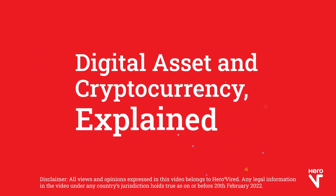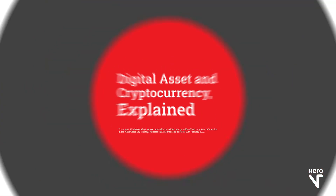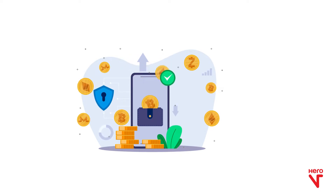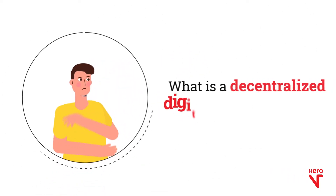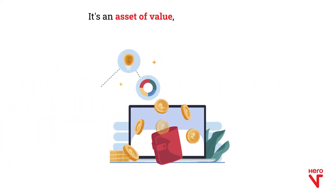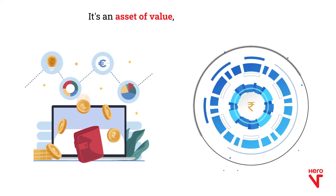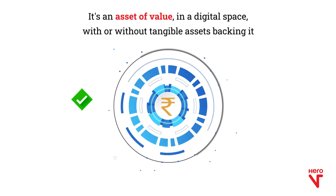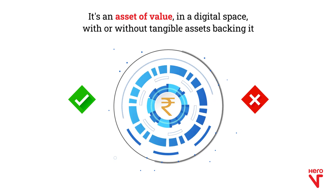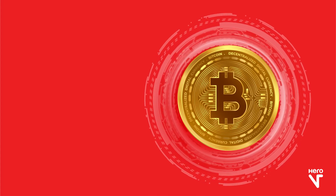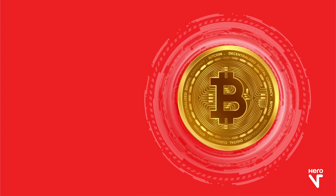Digital asset and cryptocurrency explained. The seminal paper from 2008 by the legendary and yet anonymous Satoshi Nakamoto paved the way for what we call decentralized digital assets today. In a nutshell, a digital asset is something that serves as a store of value but exists entirely in the digital sphere. It may or may not have a real-world asset backing it — it could be something like Bitcoin, a decentralized digital currency not backed by a tangible asset like gold.